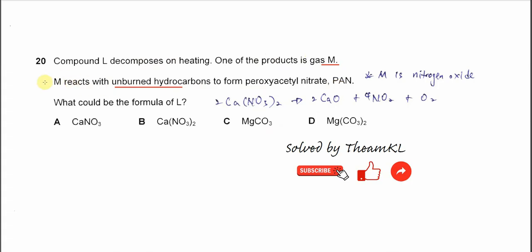So from here we know that the gas M is nitrogen oxide, and which compound will produce the nitrogen oxide? Option A, this one, is confirmed wrong. The formula is wrong.